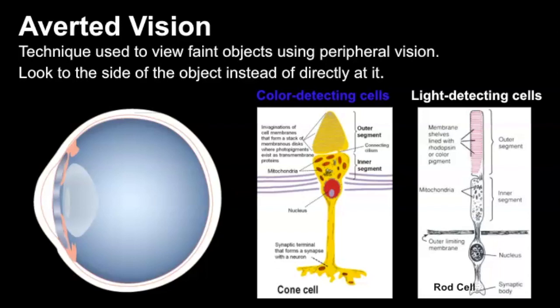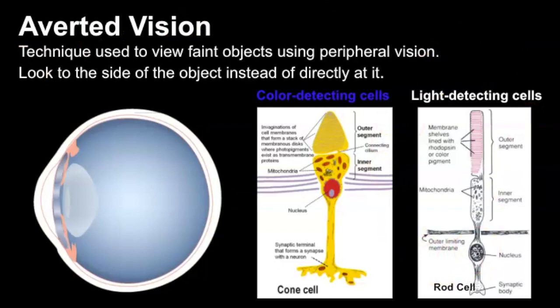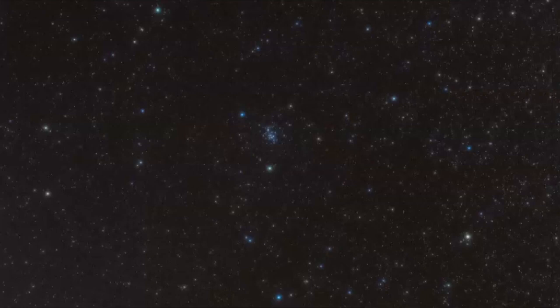Averted vision is a technique you can use to view faint objects using your peripheral vision — you look to the side of the object instead of directly at it. If we break down the anatomy of a human eye, in the central region we have lots of cone cells, which are color-detecting cells. But on the sides of your eye there's a higher concentration of rod cells, which are light-detecting cells. Even Aristotle himself documented using this technique to look at celestial objects. So as you're looking at these fuzzy little patches in the sky, look to the side and the object may come across with more clarity.